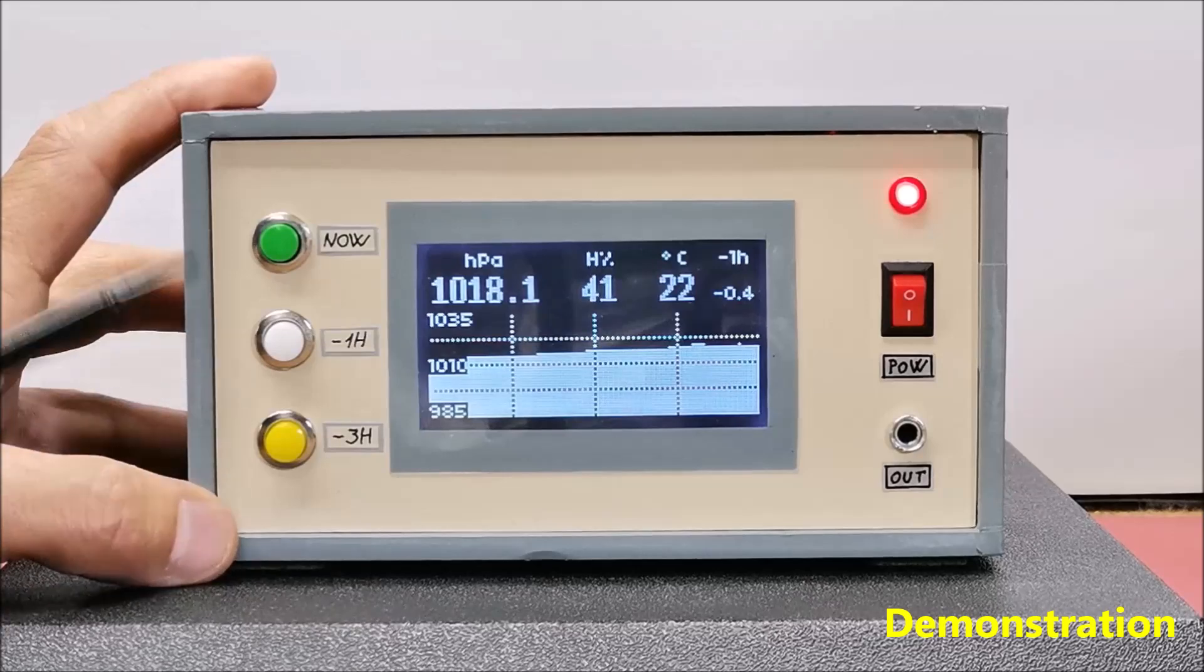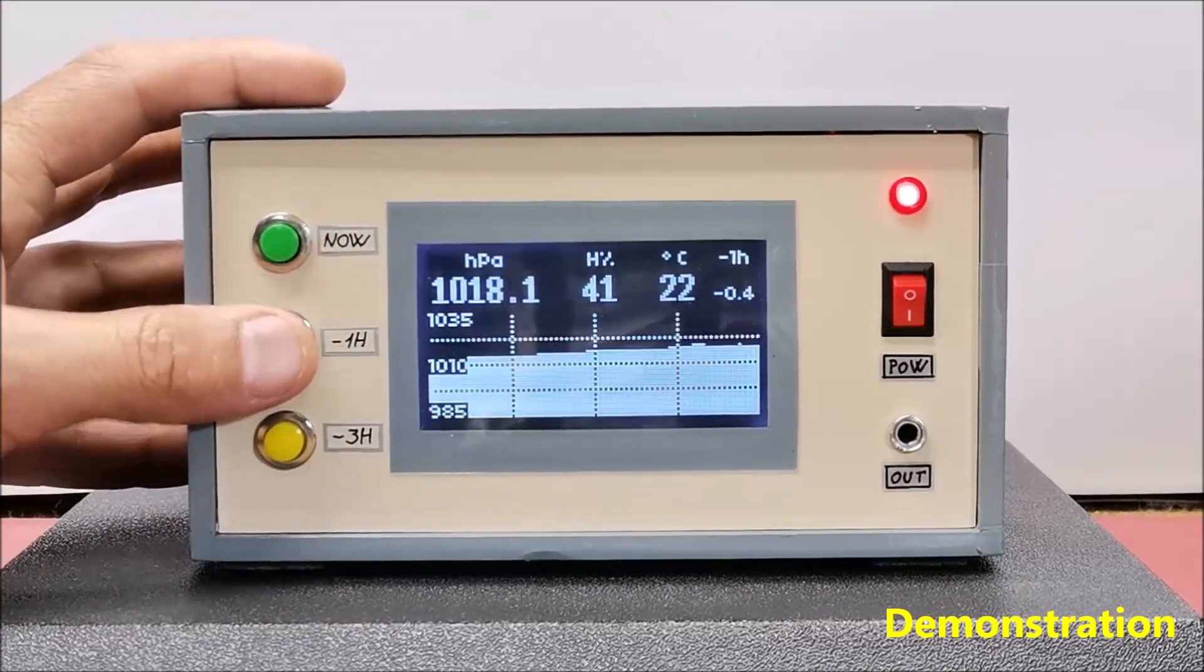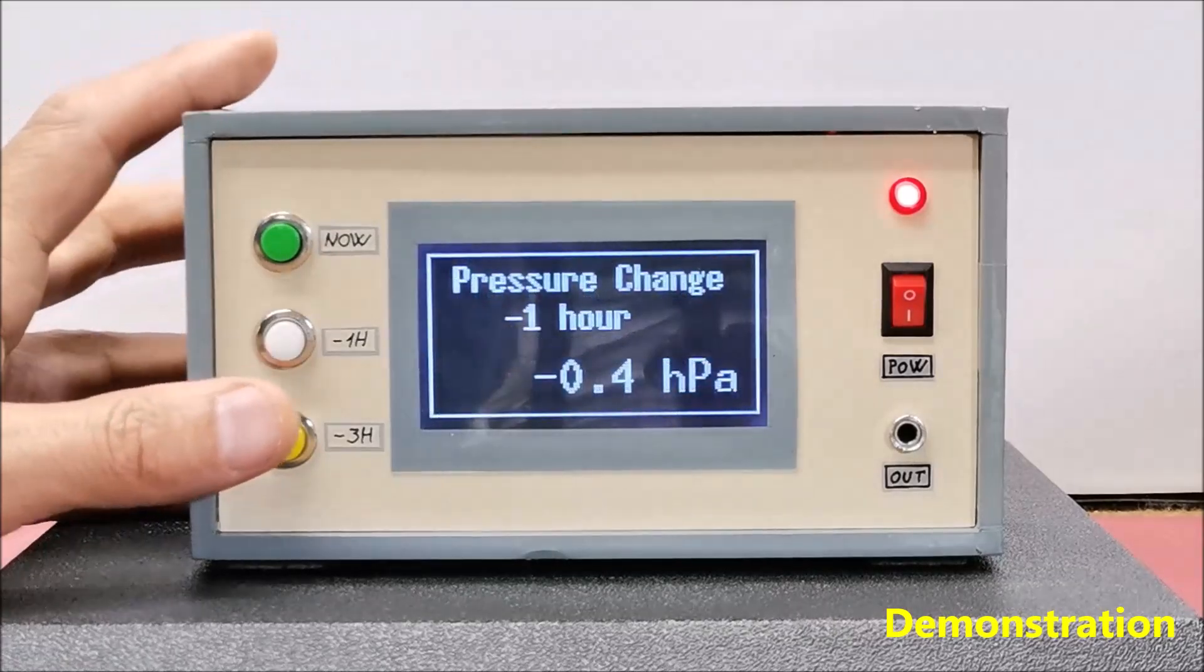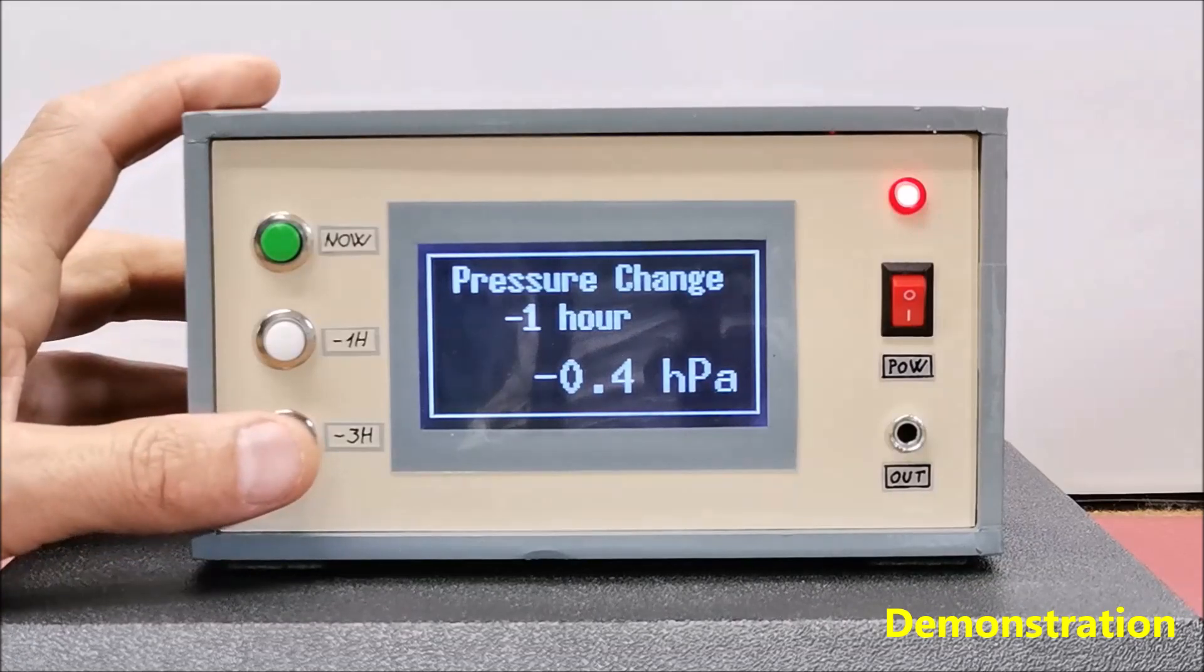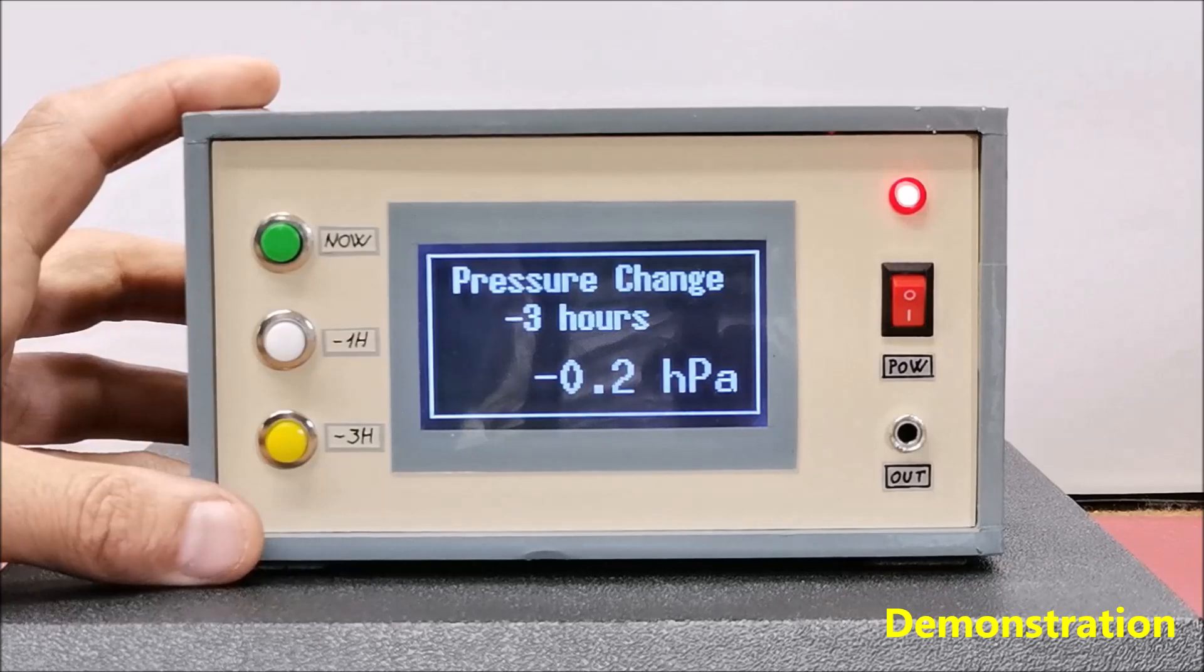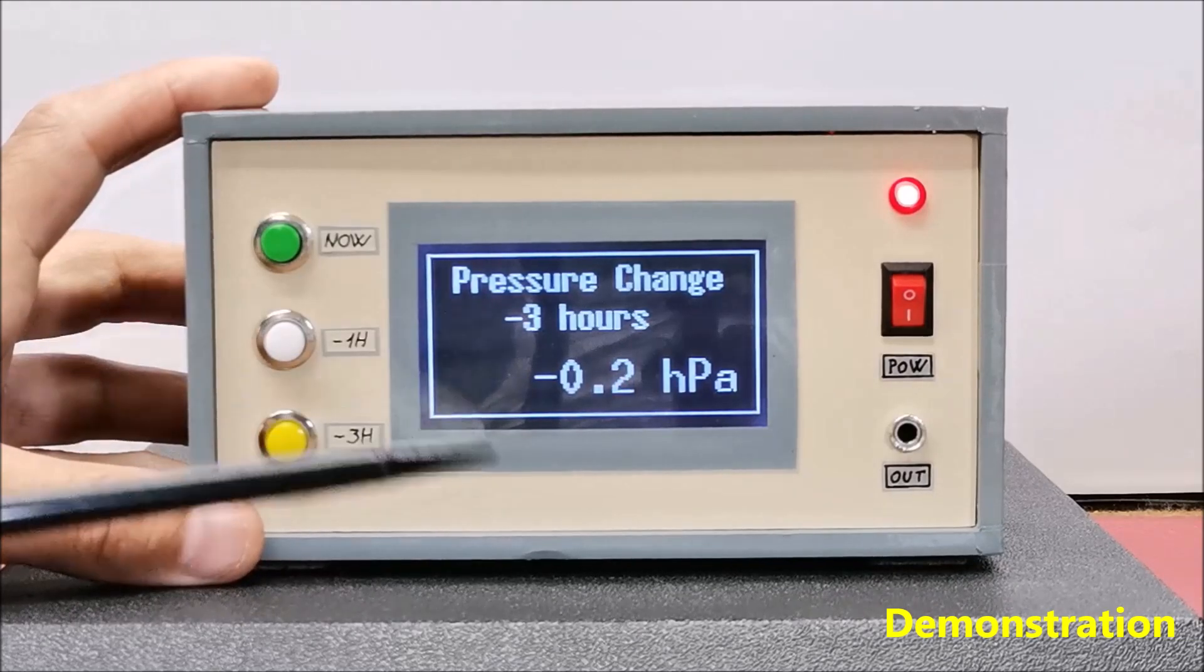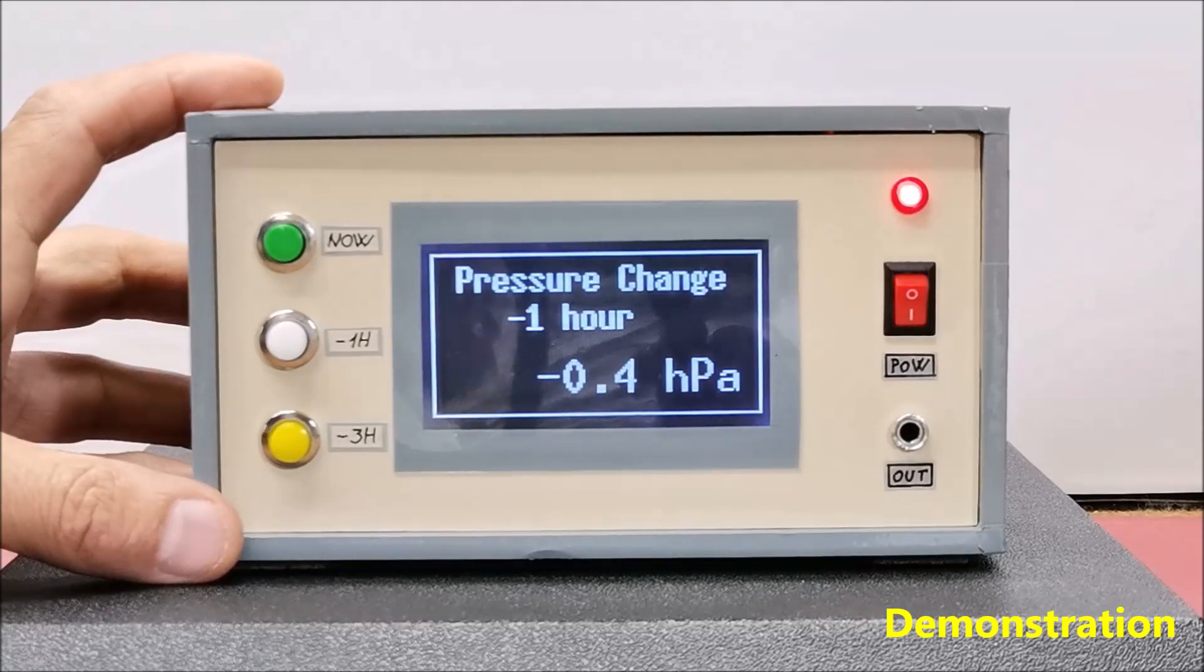The other two buttons function in the same way. The middle one displays the value of difference between the current pressure and one from one hour ago. And the bottom button displays this difference from three hours ago. These two values are by definition the most important for short term local weather forecasting.